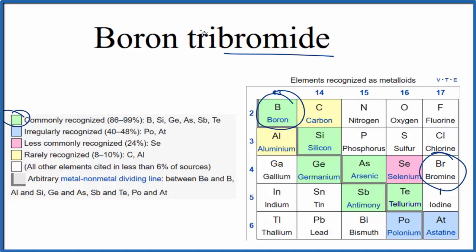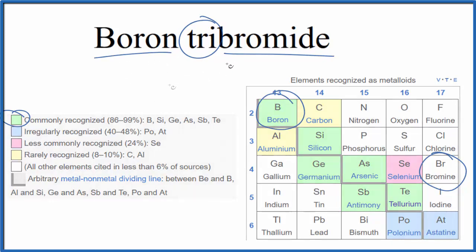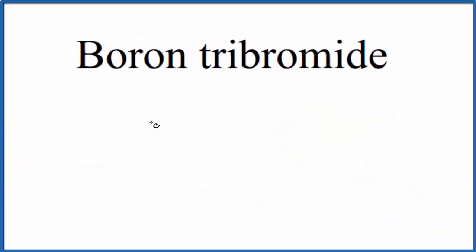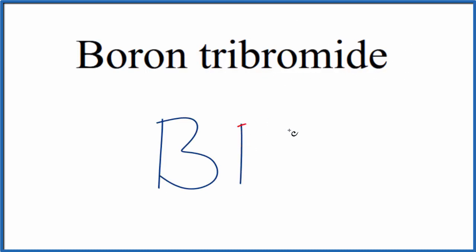Seeing the prefix 'tri' is another clue that this is a molecular compound with covalent bonds. To write the formula for boron tribromide, we first write the element symbol for boron, which is just B. Then we have 'tri bromide' — bromide comes from bromine, so we write Br.